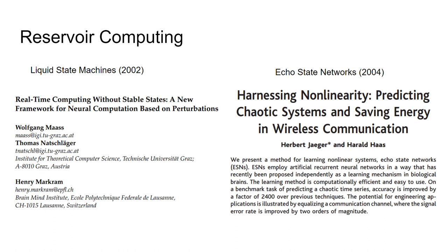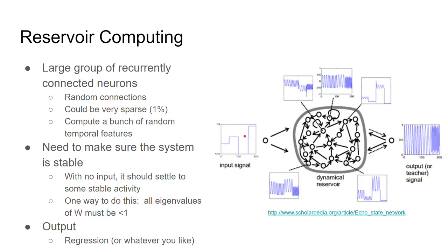Reservoir computing got created from two different lines of reasoning: liquid state machines in 2002 and echo state networks in 2004. They're both types of reservoir computing. The main difference is that one started by assuming the individual components were biological — they would emit spikes rather than continuous values, so features were just zeros and ones. Conceptually they're very similar, with lots of technical details different, but one was doing ones and zeros and the other continuous values.